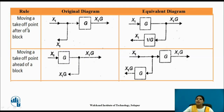The next rule is moving a summing point after a block. Here this is a summing point and it is shifted after the block. For that, add a block having a transfer function as the reciprocal of the transfer function of that block — that is 1 by G.